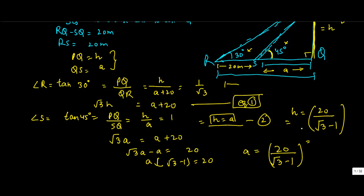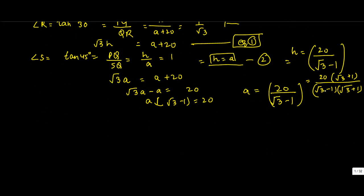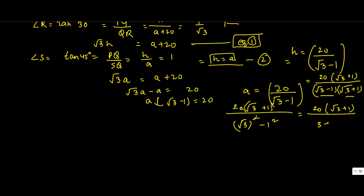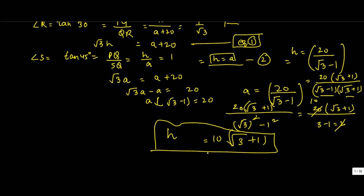To rationalize, multiply numerator and denominator by (root 3 plus 1). The denominator becomes (root 3 minus 1)(root 3 plus 1), which is a difference of squares giving root 3 squared minus 1 squared, equal to 3 minus 1 equals 2. So we get 20 times (root 3 plus 1) divided by 2, which equals 10 times (root 3 plus 1). Therefore, H equals 10(root 3 plus 1).